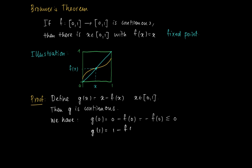If we look at g of 1, then this is 1 minus f of 1. And I know that f of 1 is smaller or equal than 1. So that g of 1 is at least 0.